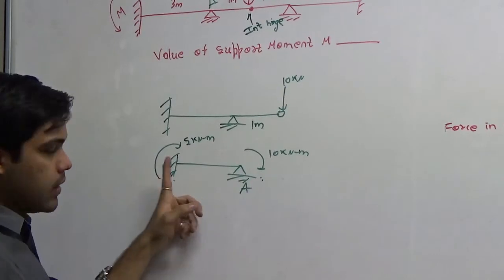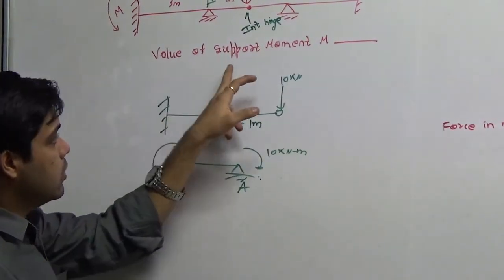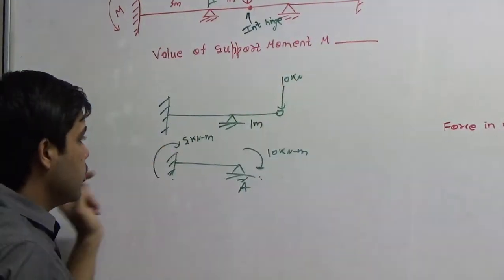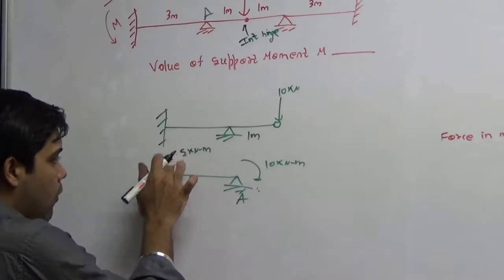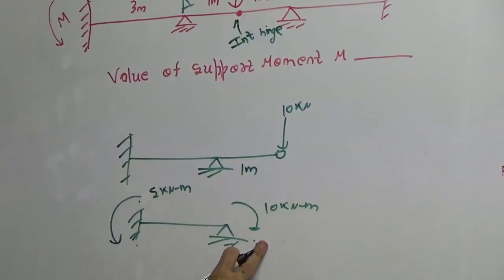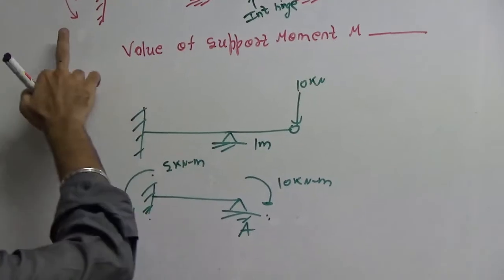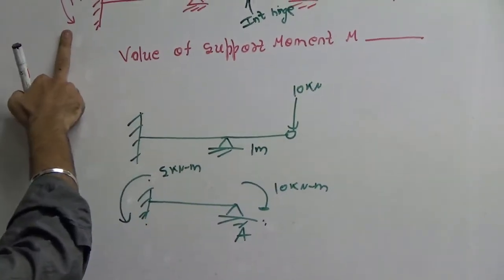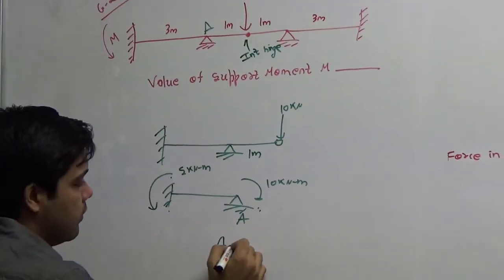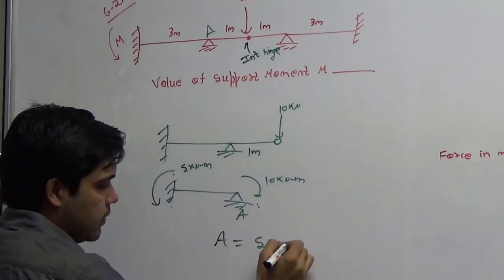This is the carry-over moment, but it is asked what is the value of support moment M. This will be of opposite sign, resisting the 10 kN·m. Since the direction given is similar to this direction, the answer to this question will be 5 kN·m.